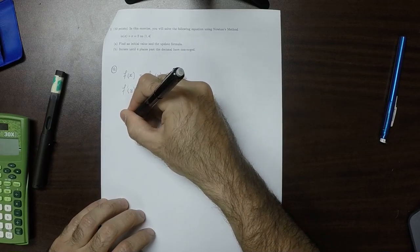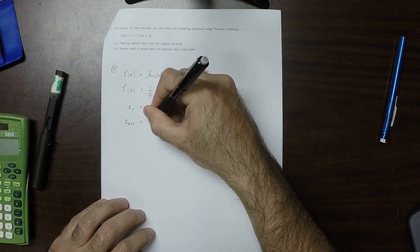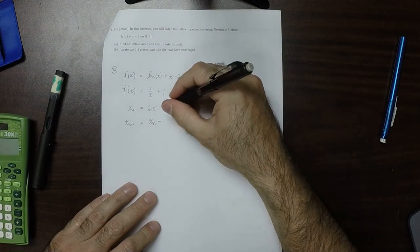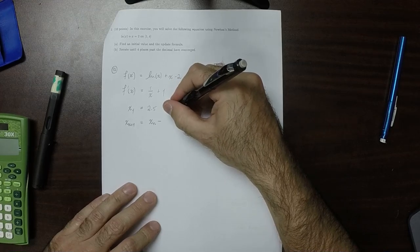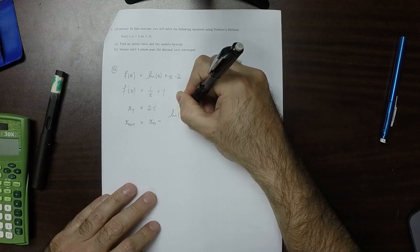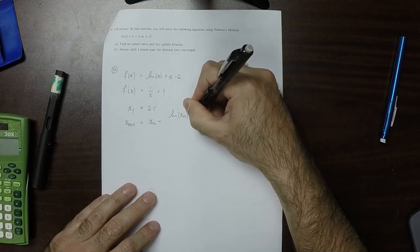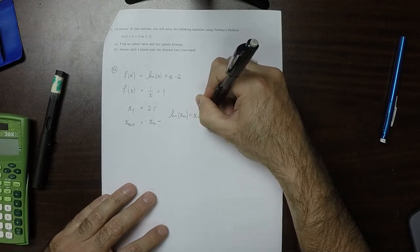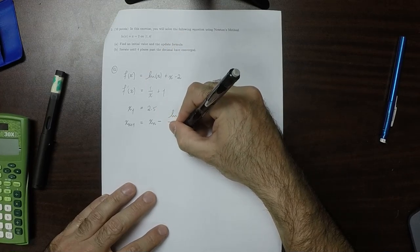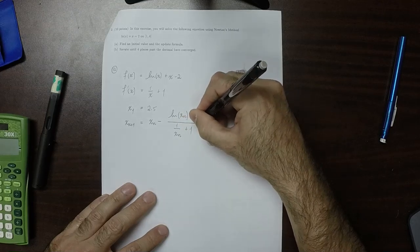And then the update formula xn plus 1. Well, that's xn minus this thing evaluated at xn. So log xn plus xn minus 2, and then divided by the derivative evaluated at xn. So 1 over xn plus 1.